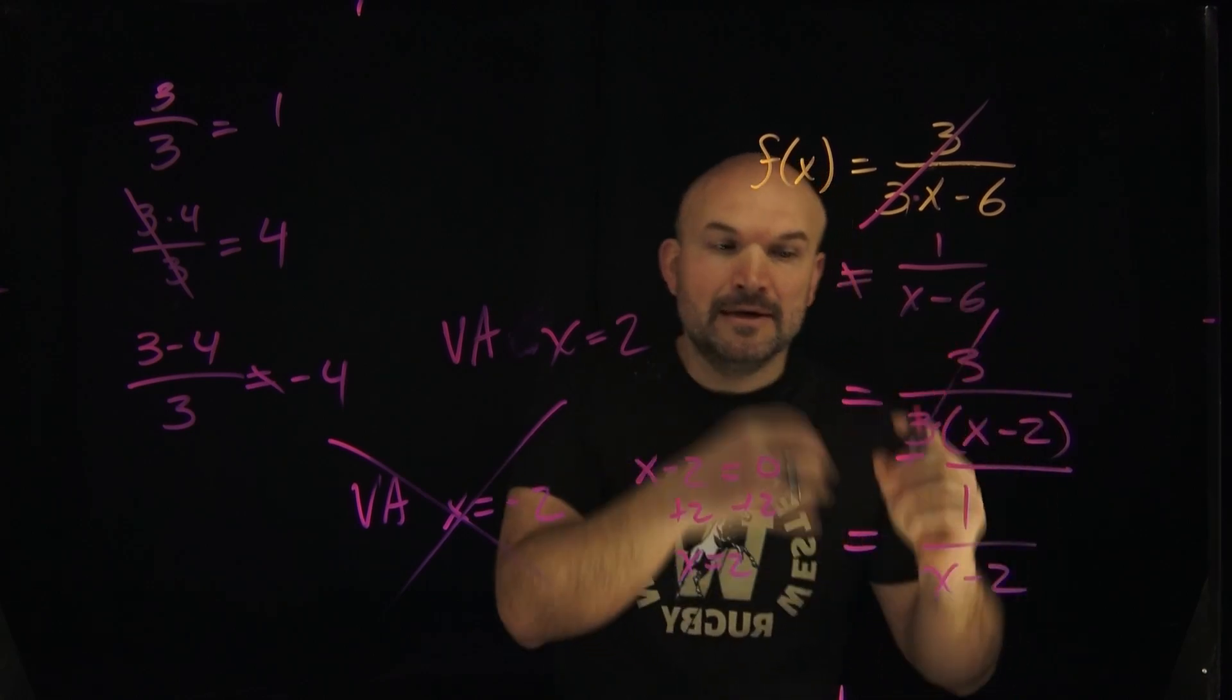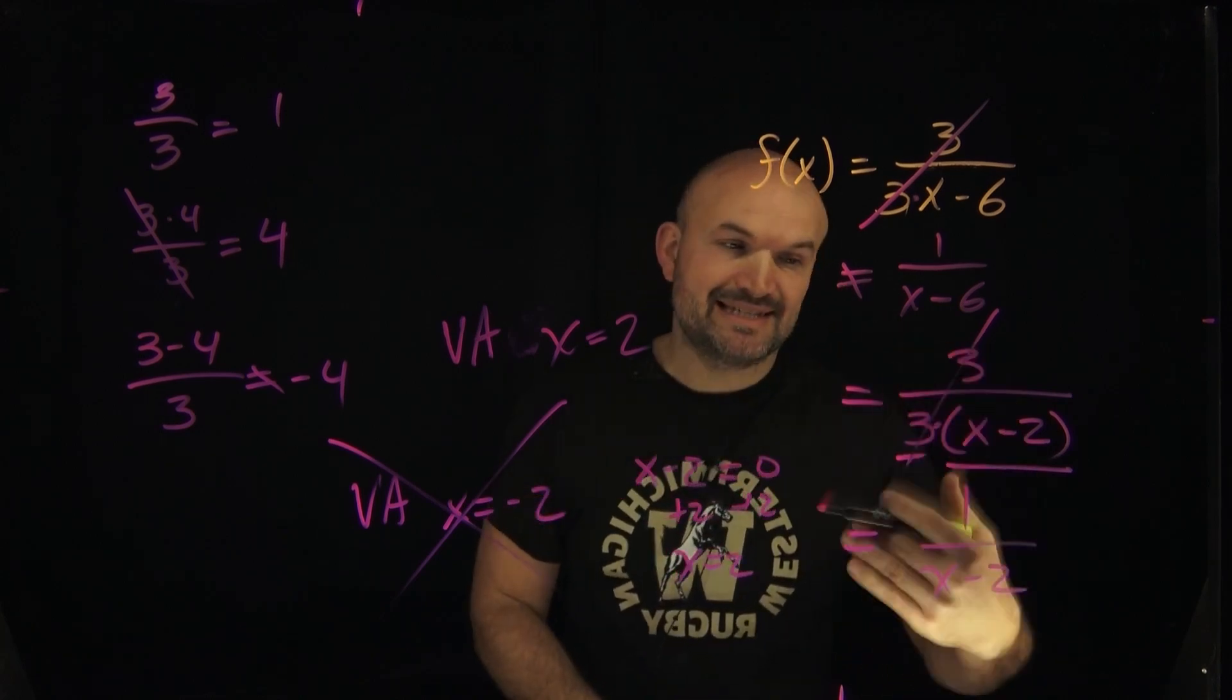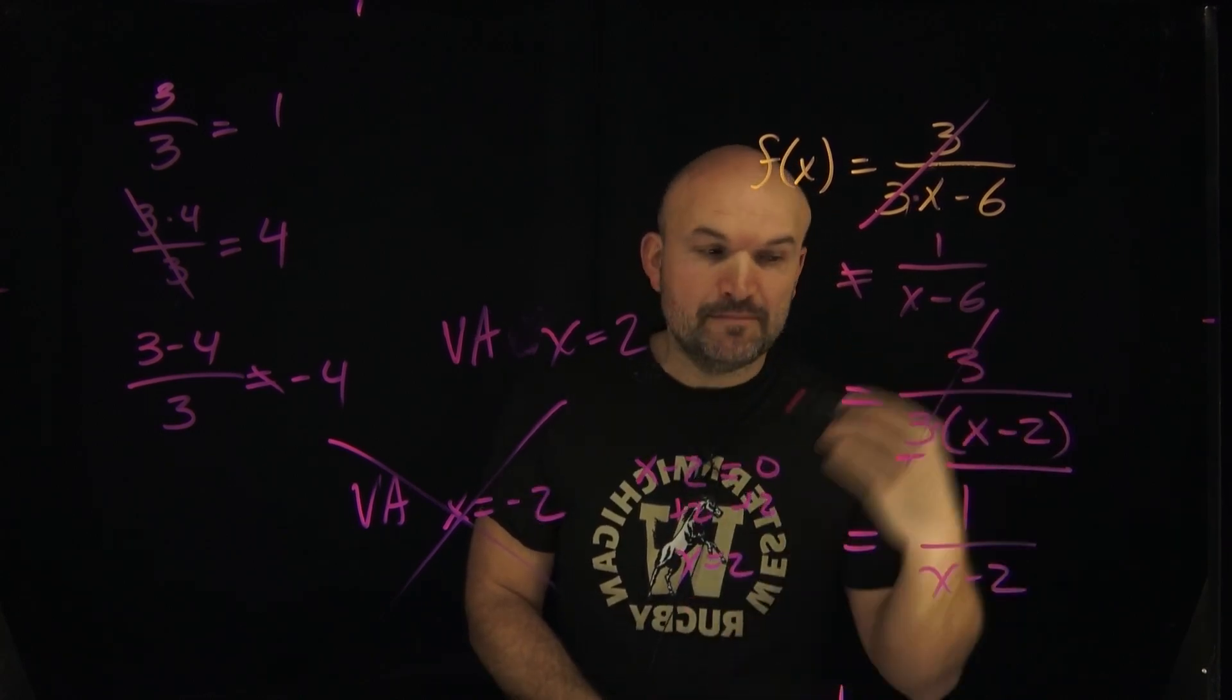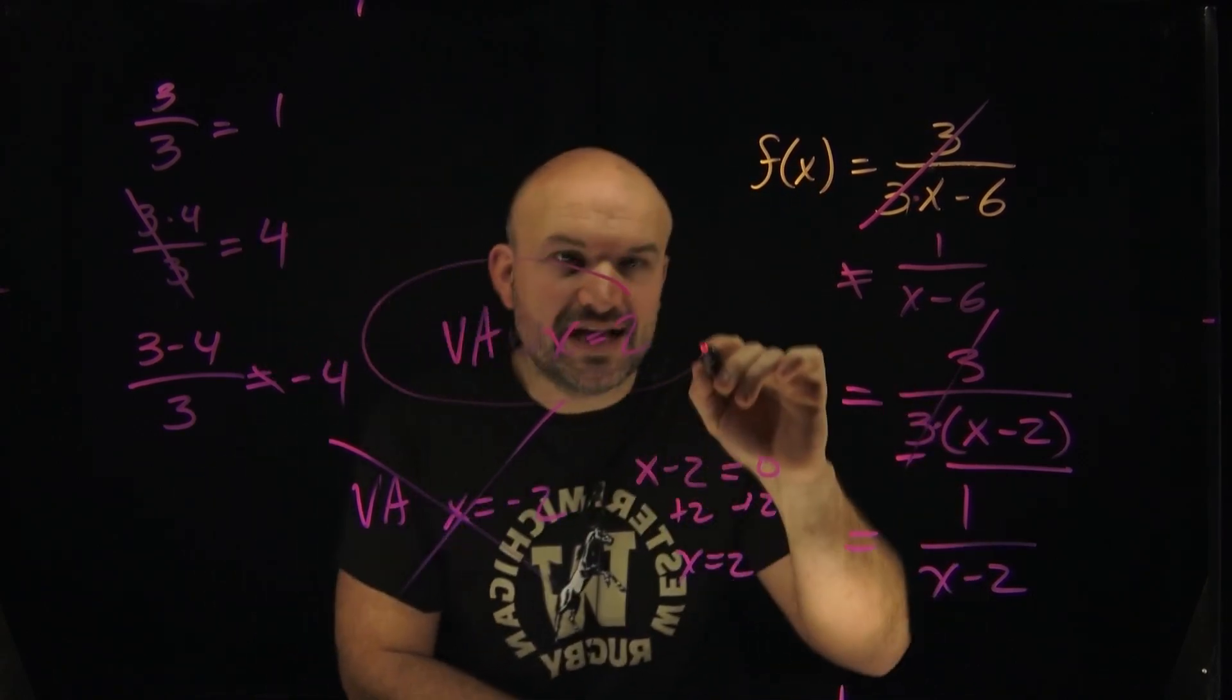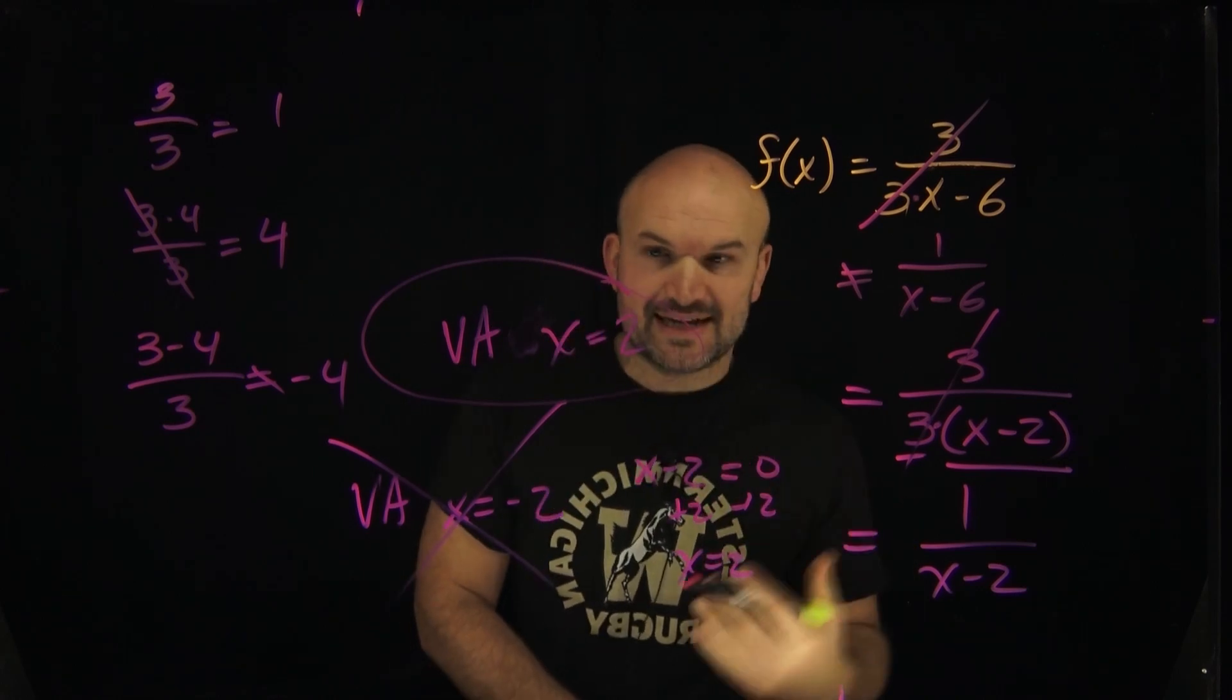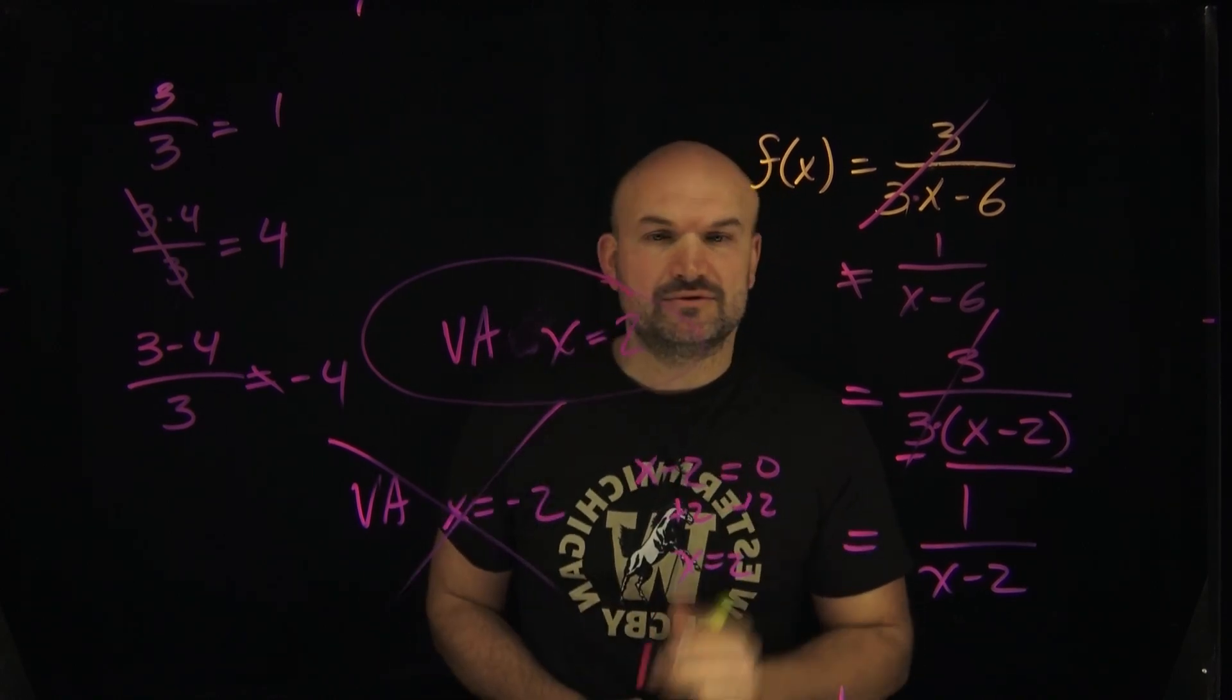Remember, for it to be an asymptote, it has to be a discontinuity, meaning that value makes the denominator equal to zero. 3 does not make my denominator equal to zero. The only vertical asymptote, which is a non-removable discontinuity, is going to be at x equals 2.